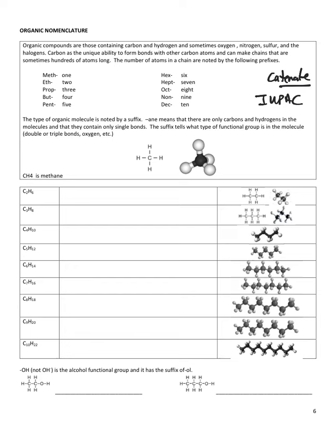Meth, eth, prop, but, pent, hex, hept, oct, non, dec. It goes beyond there, but we're just going to learn the first ten. These correspond to the number of carbons in the chain from one to ten. Memorize these, it's going to be very important.